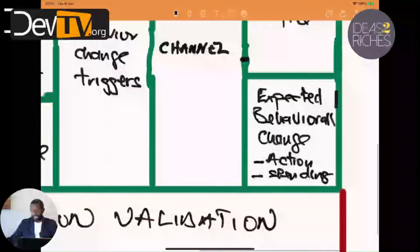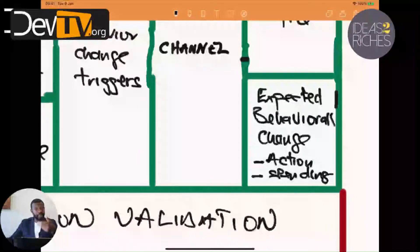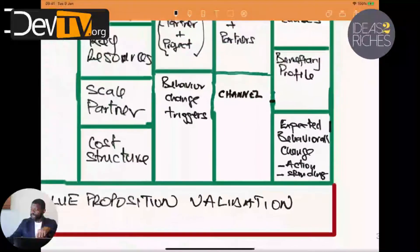The third element is the expected behavioral change. Very often when we do interventions, we expect somebody to change behavior — we expect the partner to be inclusive in its business practices, or we expect the beneficiaries themselves to either increase their level of investment, meaning buy more inputs to get more output. So we need to include in the canvas what the expected behavioral changes are, whether that's action or spending, where spending here means investment.